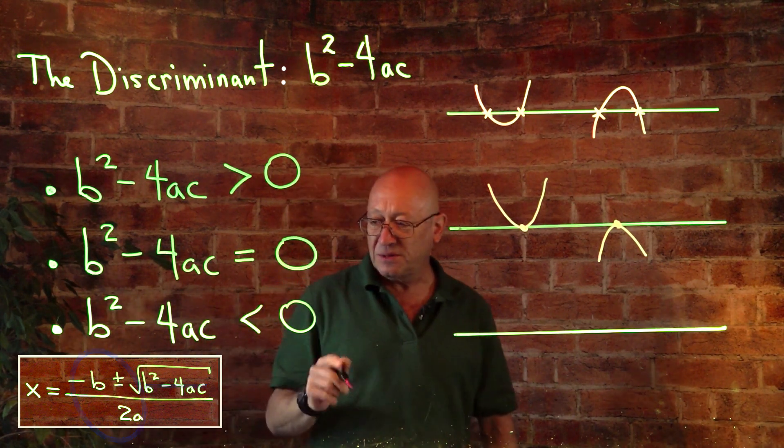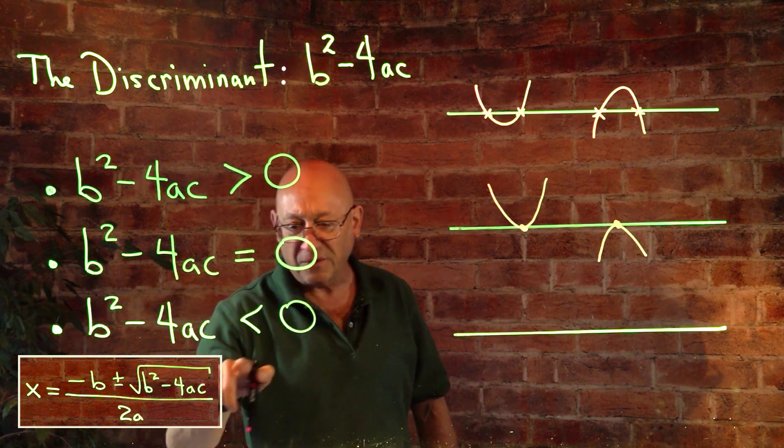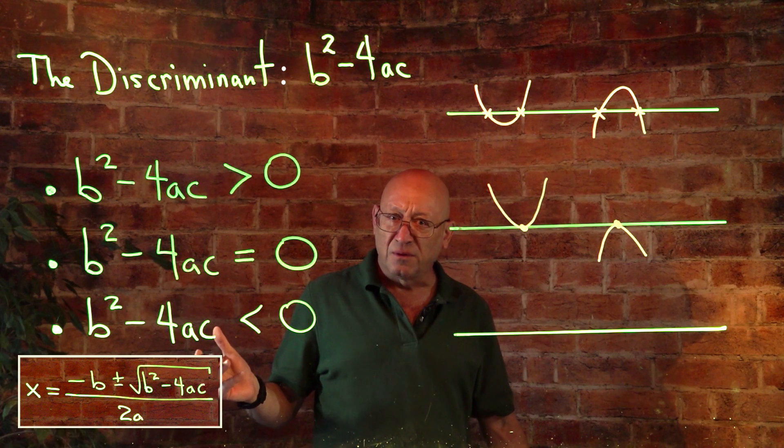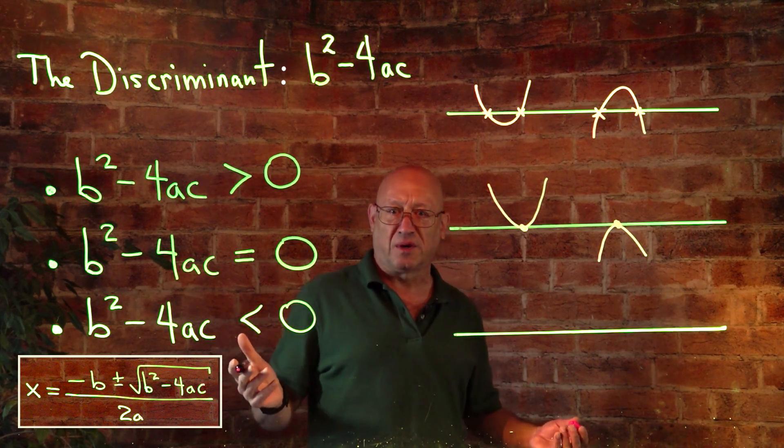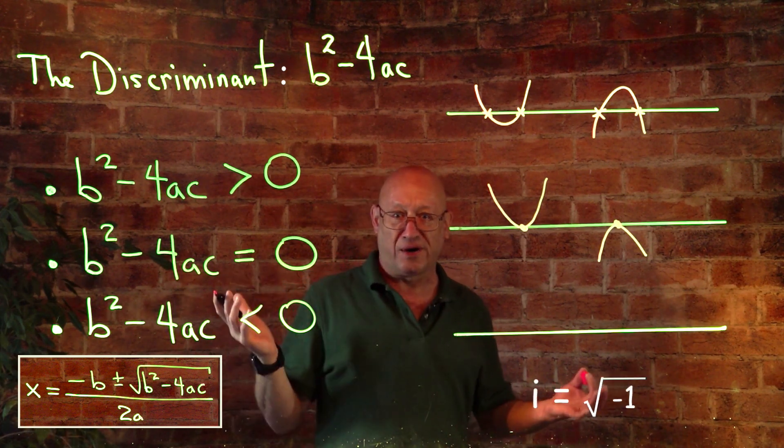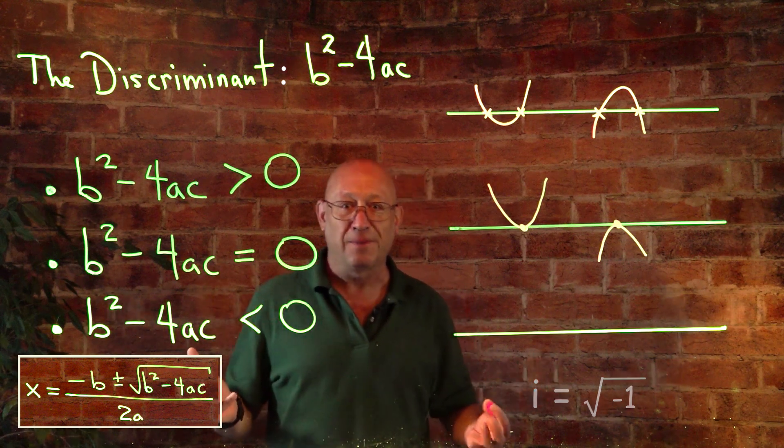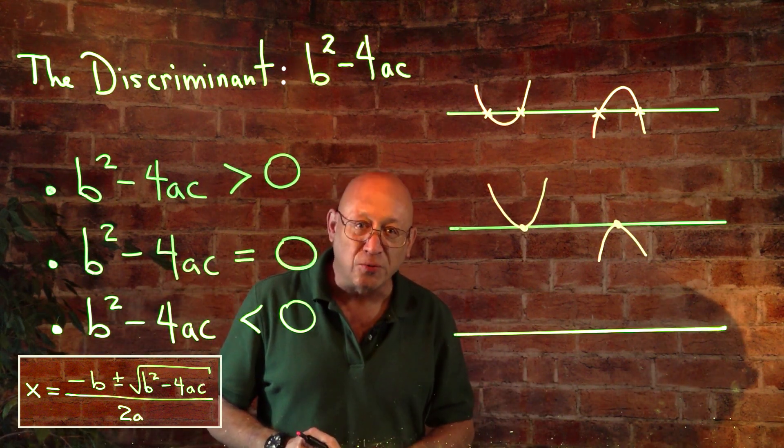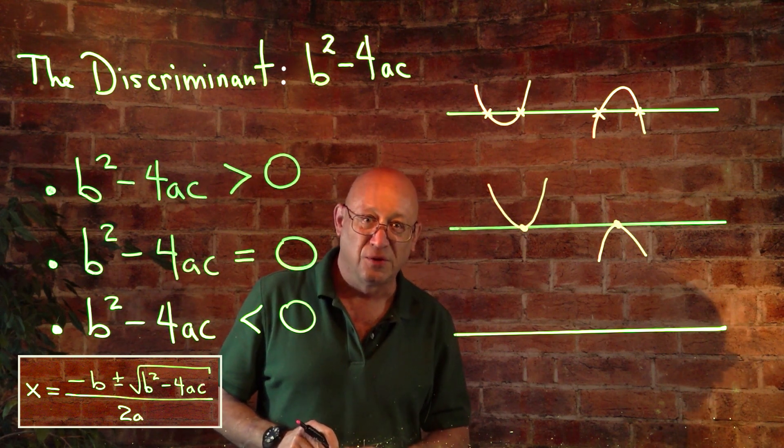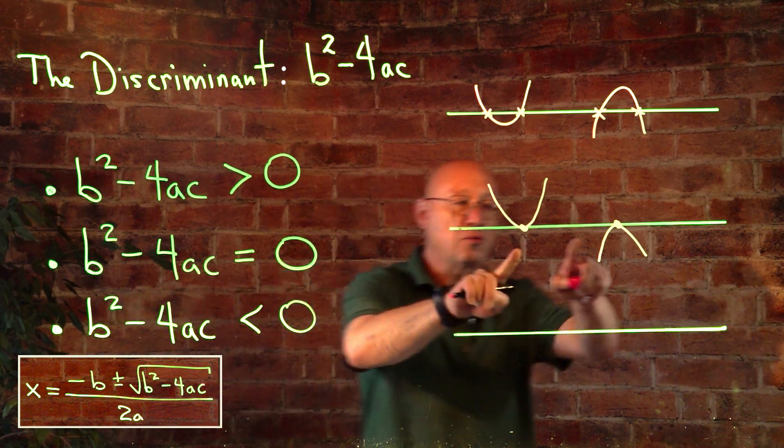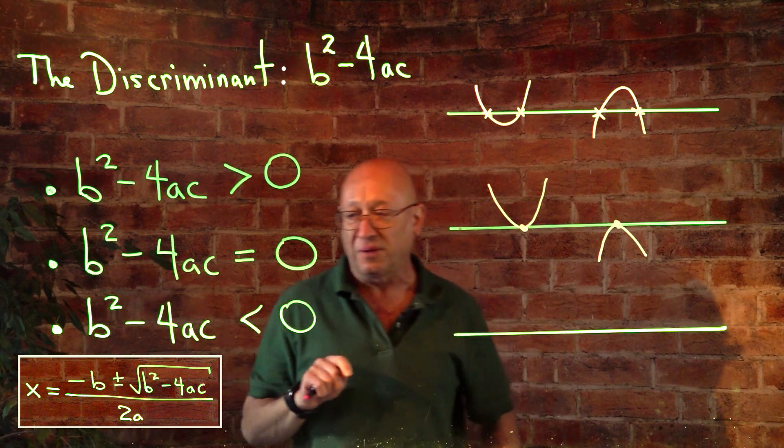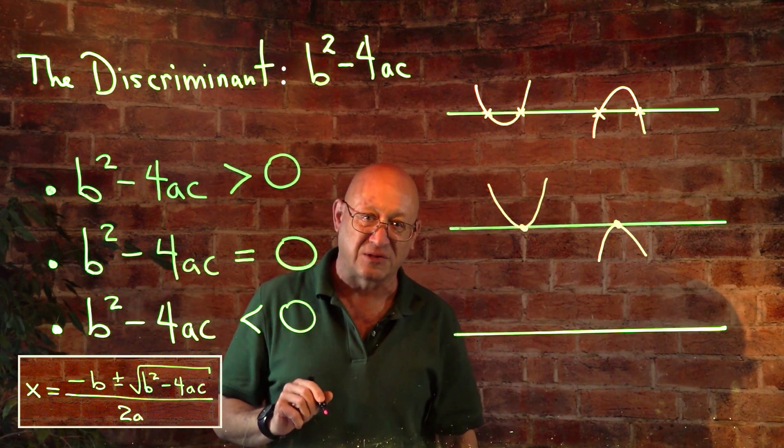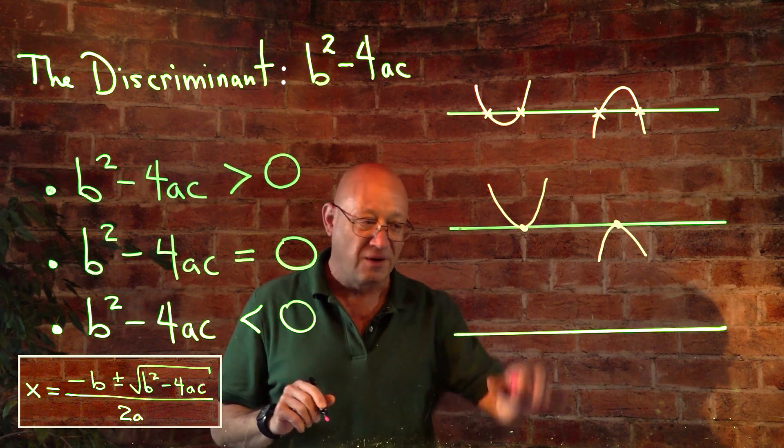Now what happens when b squared minus 4ac goes negative? Now you've got those complex numbers we were talking about. You got an i in your answer. It's a complex number. What's happening here is that your parabolas don't cross the x-axis. There's no real solution. These are all real solutions, they're real numbers. When you've got this situation, you only have complex answers.